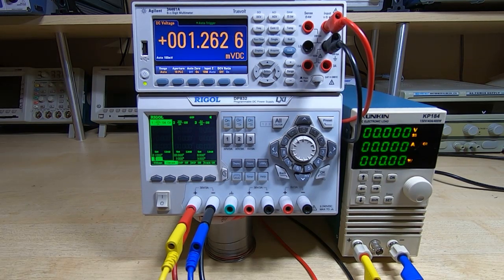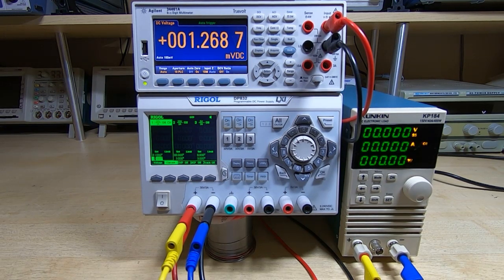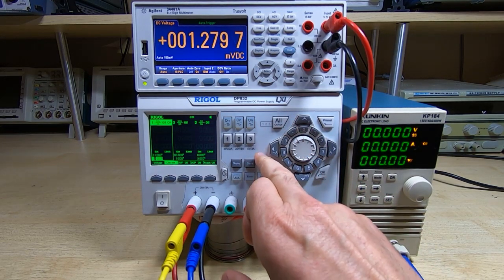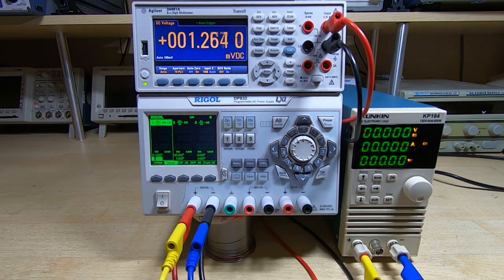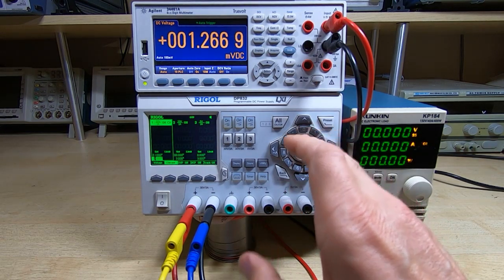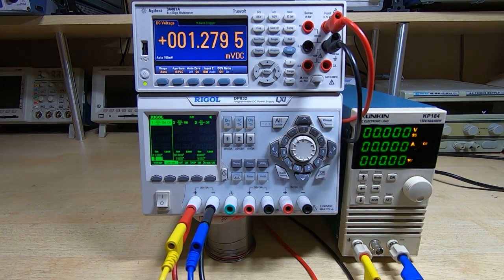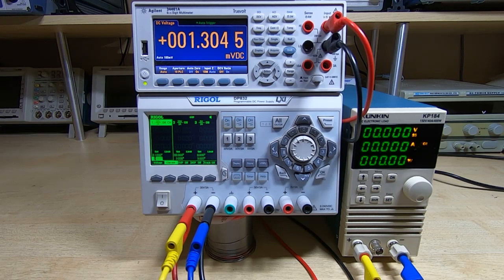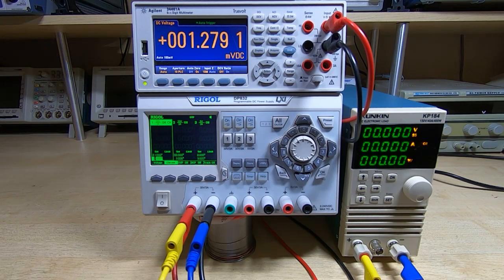This is the fifth and probably final part in a series of videos where I've been attempting to repair this Rigol DP832 power supply. The issue I was having initially was that it was randomly resetting itself. It's done this since it was new, but recently got much worse, resetting itself up to about a hundred times a day, making it completely unusable, so I decided it was time to investigate.